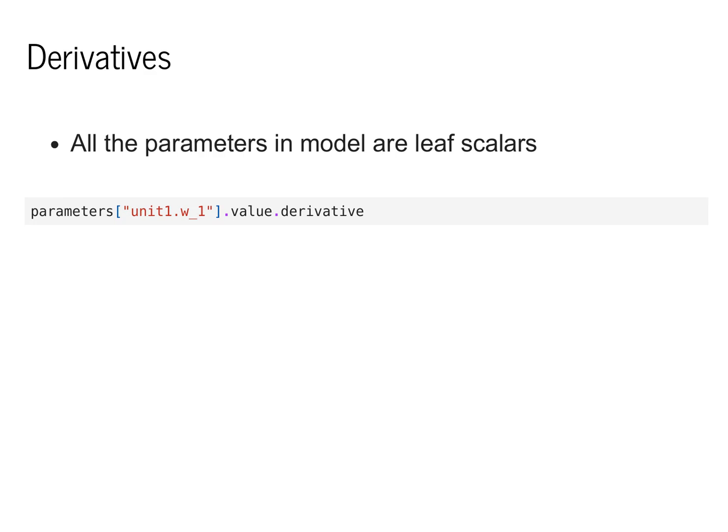We can even look at these directly. If I look at a given named parameter, say unit 1 w1, and look for its derivative value, we can see where the derivative was stored and accessible. Okay, so that about does it for our intro to neural networks.